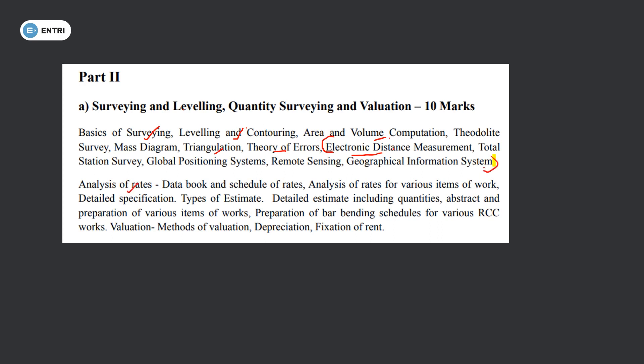The second part covers rate analysis: construction rate analysis, data book, schedule of rate, various items of work analysis, detail specification. Types of estimates: preliminary estimates, detailed estimates, quantities, extract, bar bending schedule. Valuation: methods of valuation, depreciation, fixation of rent. Quantity survey, costing value and monetary values.